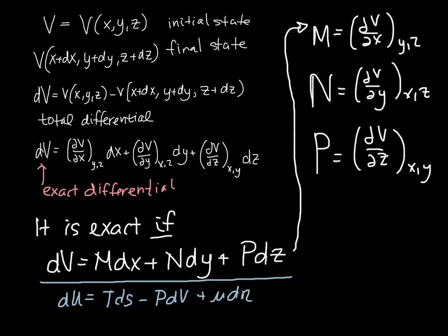So if we have this form, it is true that V or U is an exact differential, basically, if the coefficients can be defined in this way. And these expressions that I've written over here are what we call the coefficient relationships.